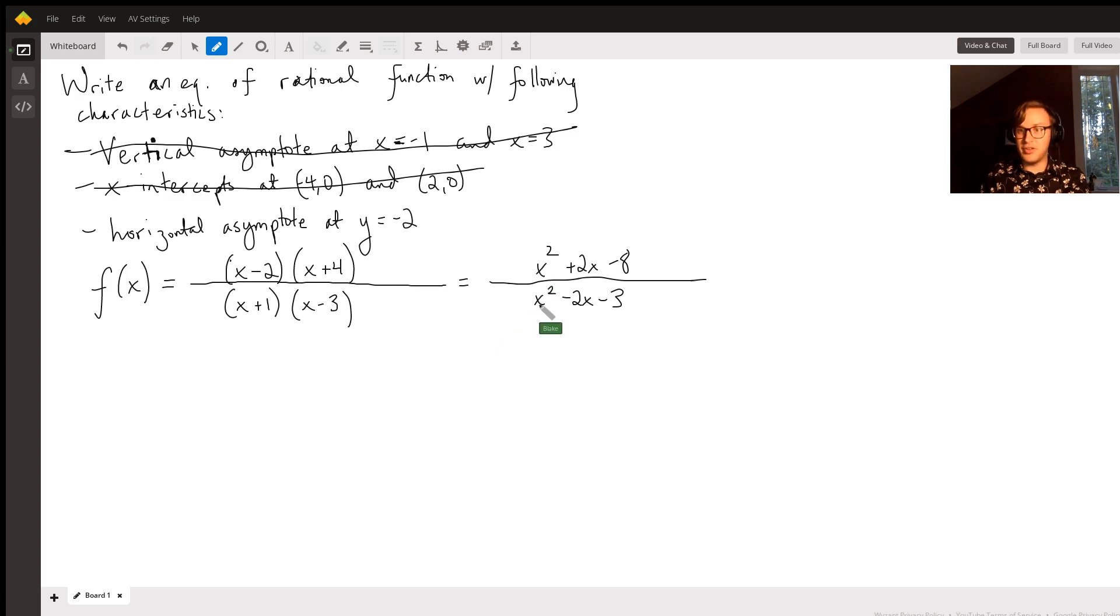So look, the coefficient in front of our x squared is 1. Now in order to get a horizontal asymptote at y equals negative 2, we have to do this. When the degree of the top is the same as the degree of the bottom, we have to make it so that the leading coefficient on the top divided by the leading coefficient on the bottom would give us negative 2.